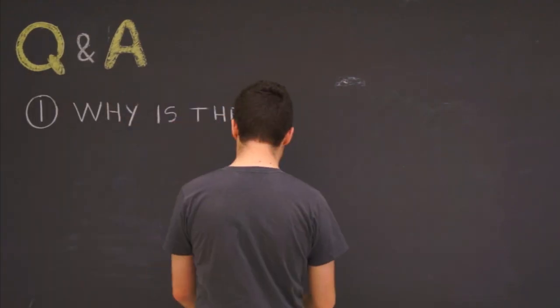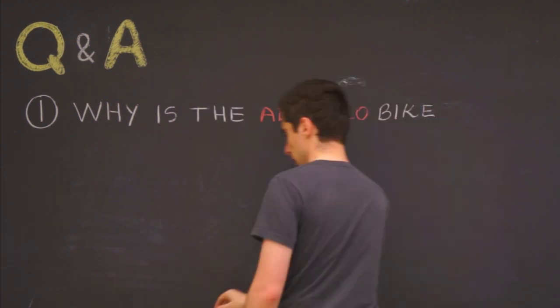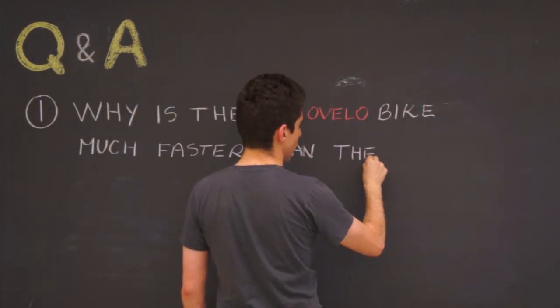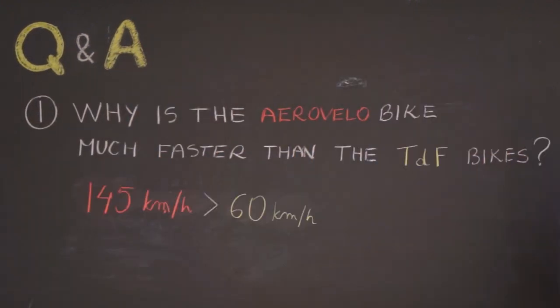So the first question we usually get is why are our bikes so much faster than the bikes used by professional riders in Tour de France? The speed differential is quite huge—our bikes are twice as fast as those. I will try to answer this fairly general question next.